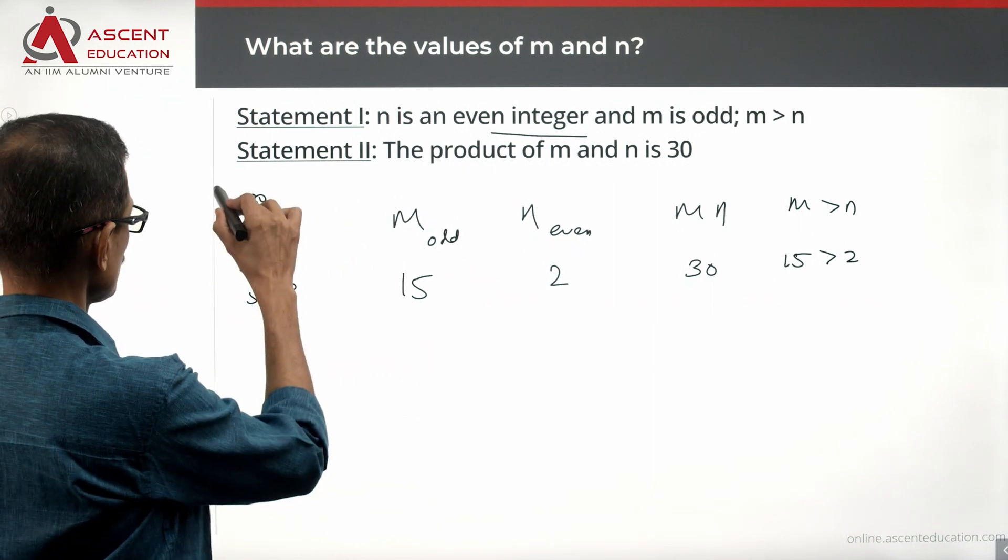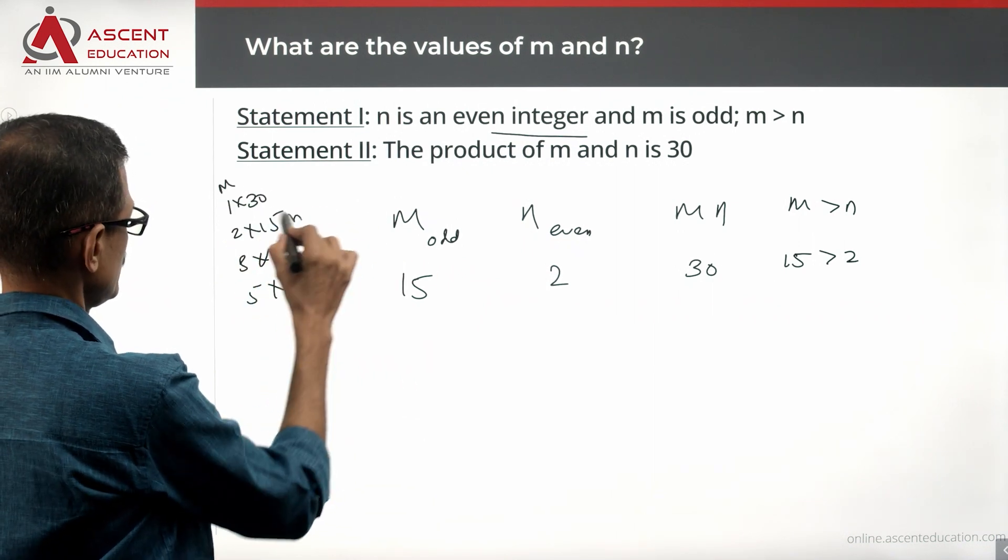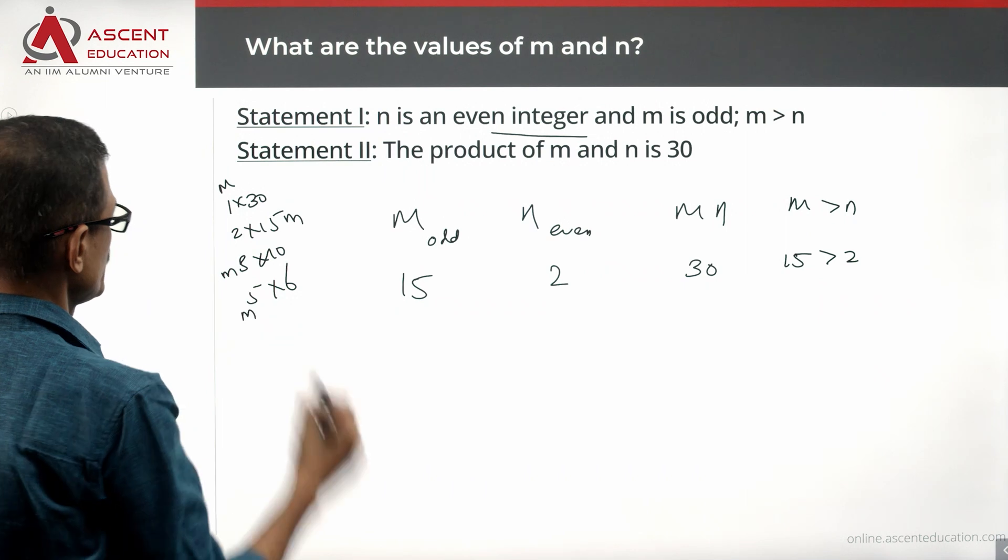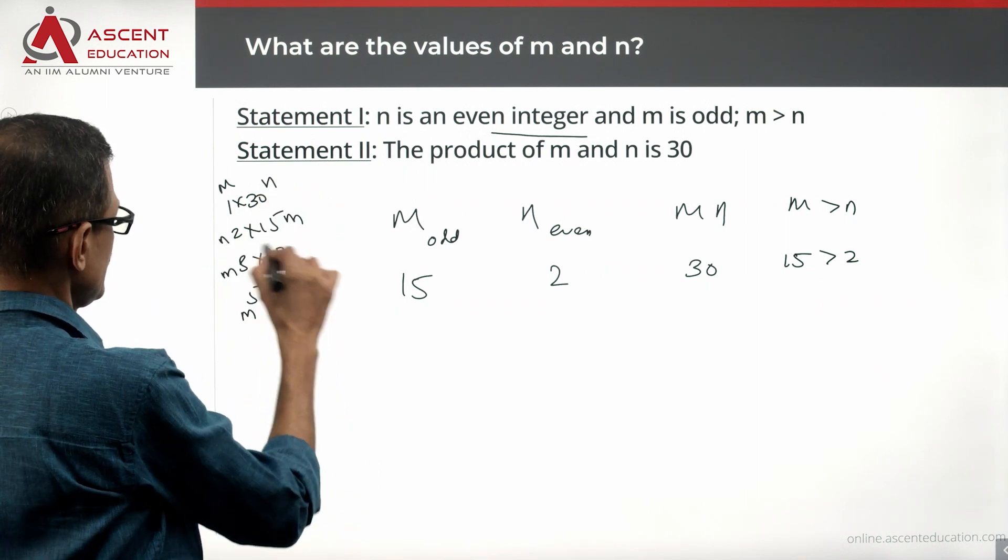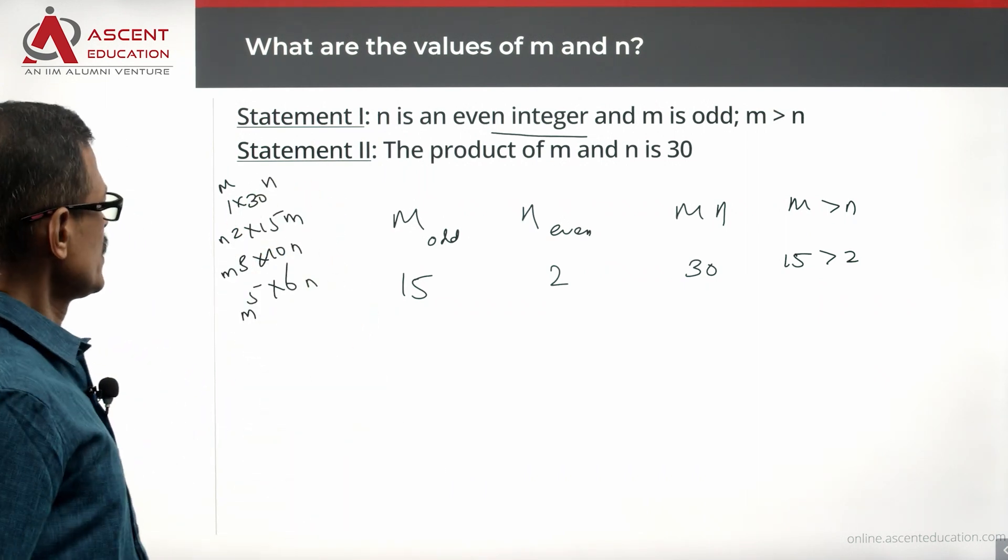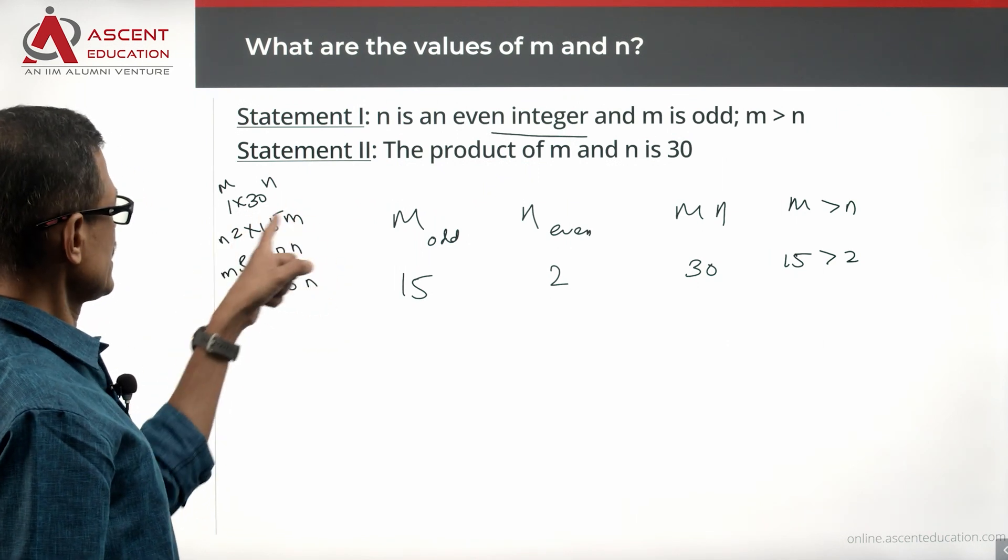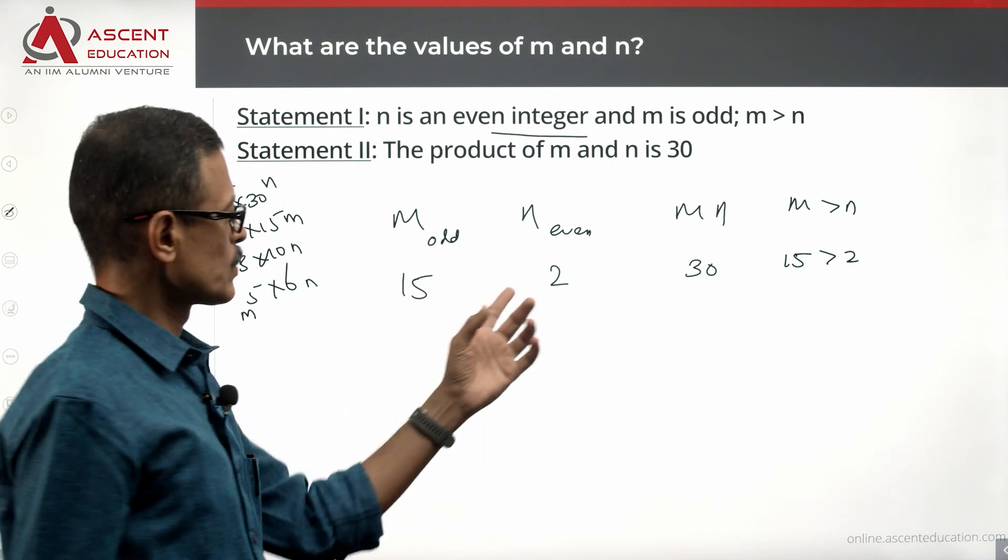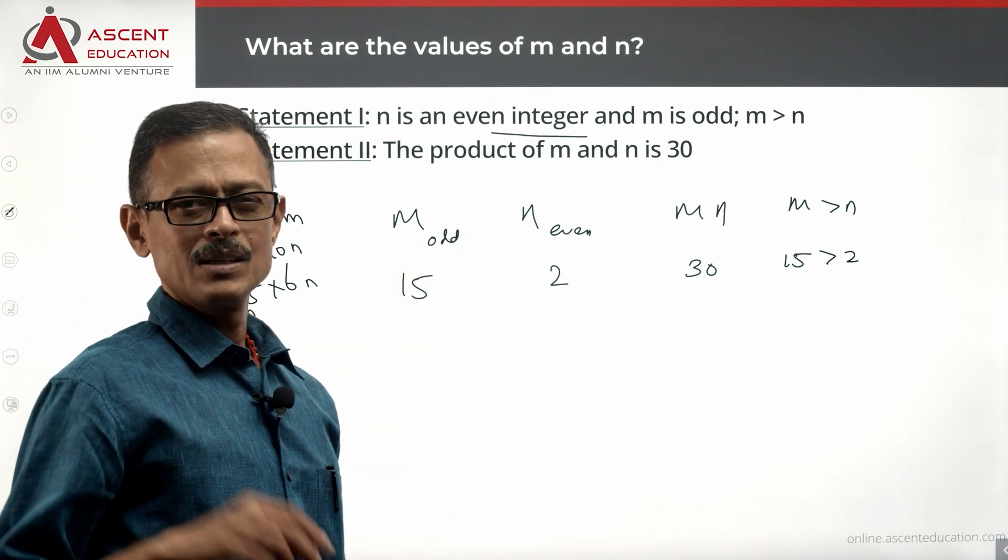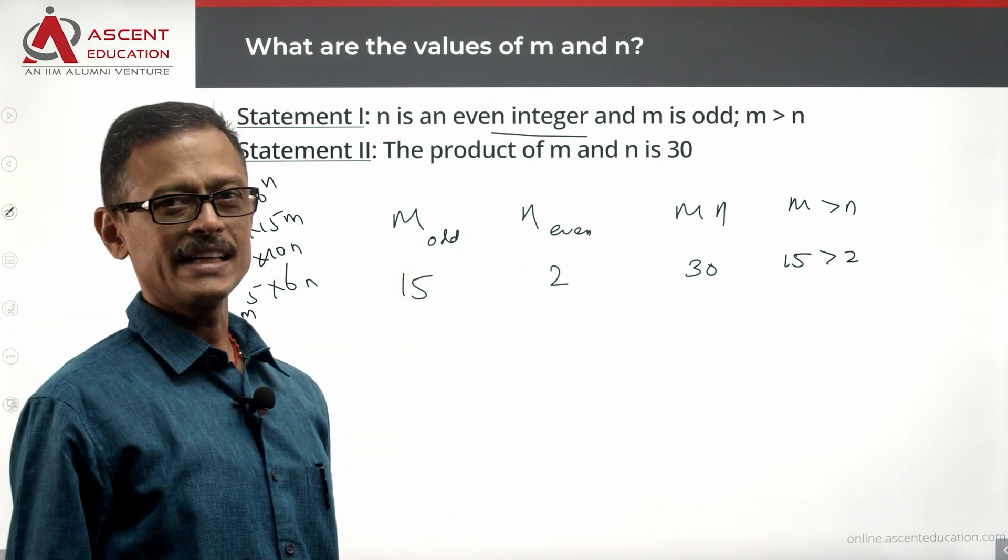So M is odd. In this case, M is not greater than N. In this case, M is not greater than N. In this case, M is not greater than N. In this case, M is greater than N. In this case, M is not greater than N. So essentially, only one answer is there. But before we sign in saying that this is the only answer, let's just see if it makes sense to look at negative numbers.